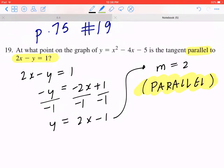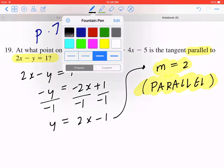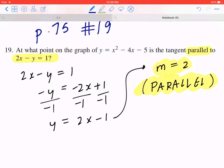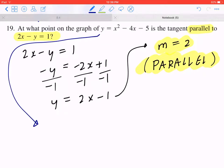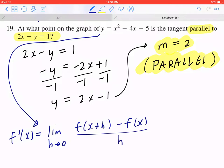Step 2. Once you find the slope, you can now move on to find the general slope of y equals x squared minus 4x minus 5. And again, don't forget the first principle. The limit as h is approaching 0 of f of x plus h minus f of x divided by h.